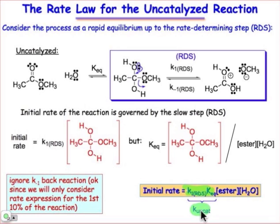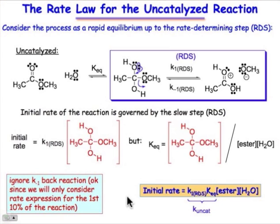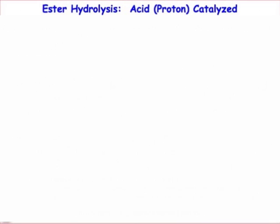One small detail: in the box on the lower left-hand side, we assume the backward reaction is negligible. We handle this by considering only the very first few percent of product formation, where the amount of product is negligible and doesn't contribute to the backward rate. This simplification lets us focus only on the forward rate — that's what we mean by the initial rate.